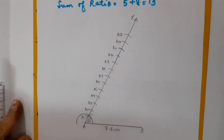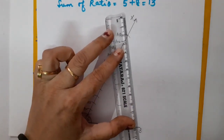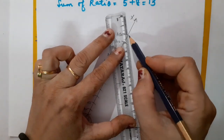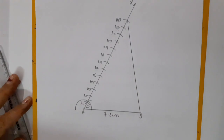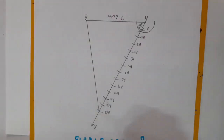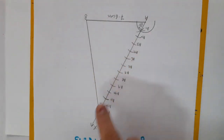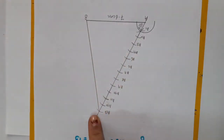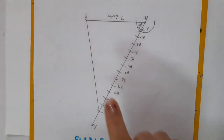The next step is to join the last arc A13 with the second point of the line segment, that is point B. Here you can see that A13 is joined with point B. Now, from A5, draw A5O parallel to A13B by making an angle at A5 equal to angle AA13B.